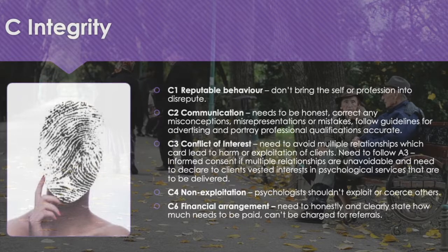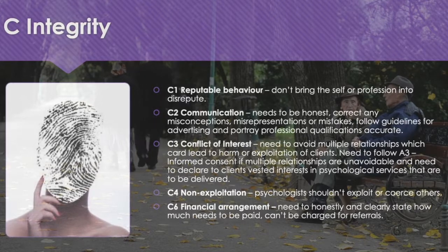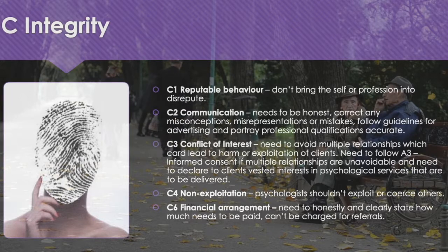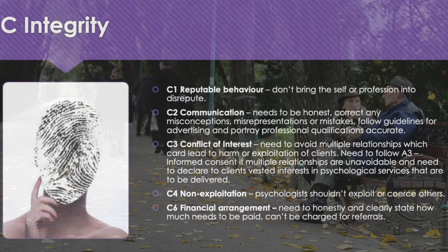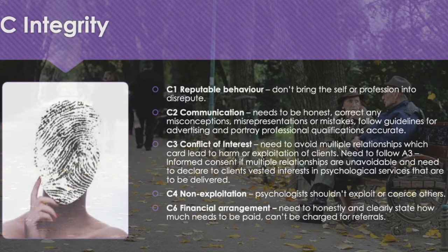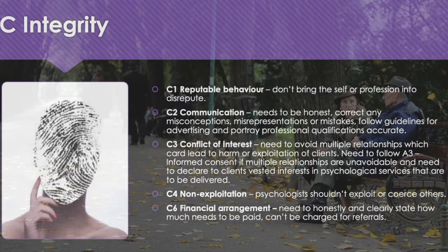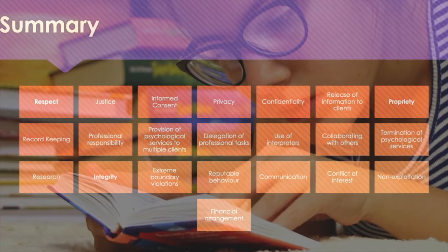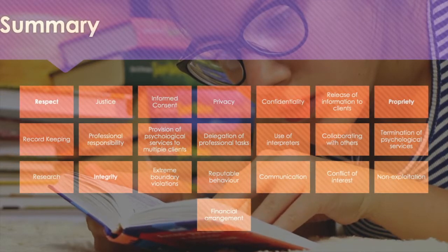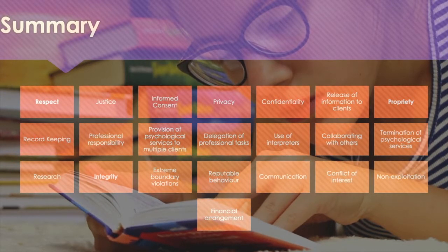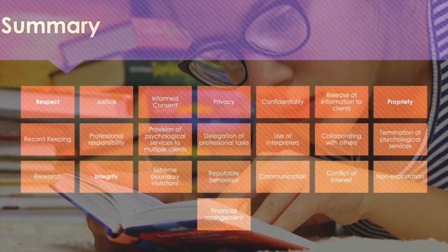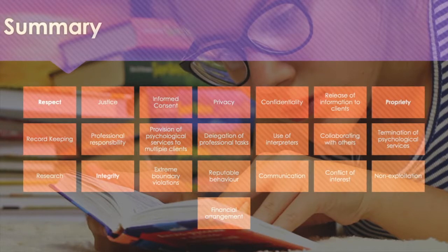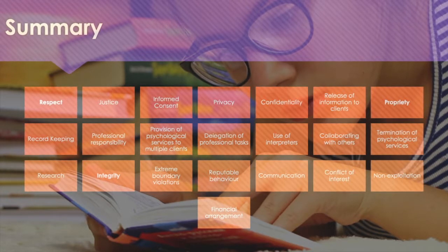C4 is Non-Exploitation — psychologists shouldn't exploit or coerce others. C6 is Financial Arrangement — one needs to be honest and clearly state how much needs to be paid. You cannot be charged for referrals. In conclusion, we looked at the Psychologist's Code of Ethical Conduct, adopted by the Psychology Board of Australia in 2007 regarding the Australian Psychological Society Code of Conduct.